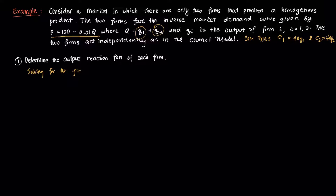We obtain the ORF by solving for the firm's first-order condition (FOC) for maximum profit, which is MRi = MCi, where i is either firm 1 or firm 2. From there we can get the quantity — the Cournot equilibrium quantity — which satisfies the conditions we discussed in the last video.